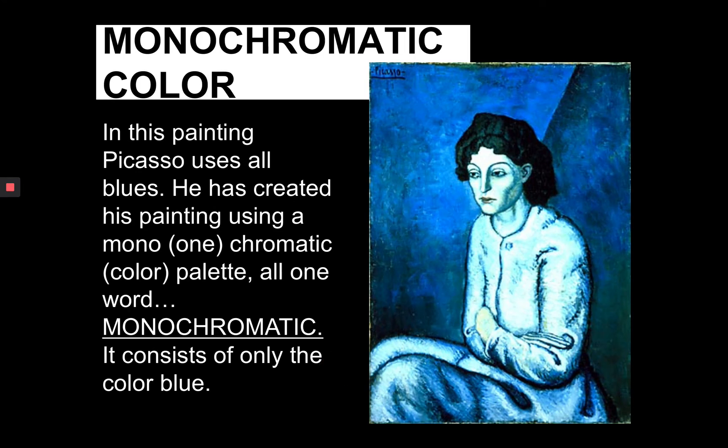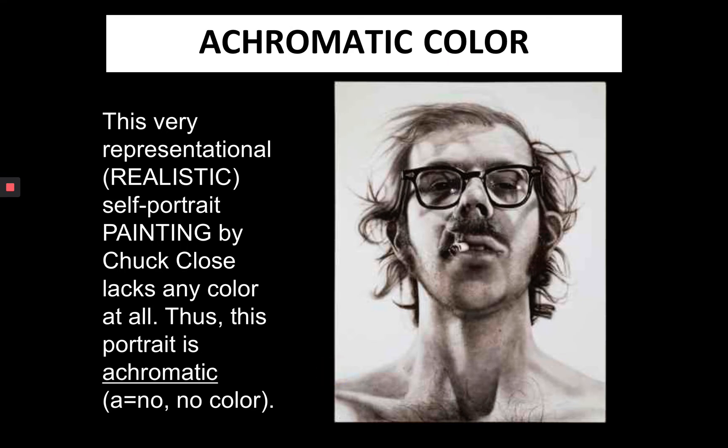Picasso was a champion of monochromatic painting. Here we see something from his blue period where indeed all of the colors are either tints or shades of the color blue. Achromatic — this is a painting by Chuck Close — means that it has only black, white, and gray.